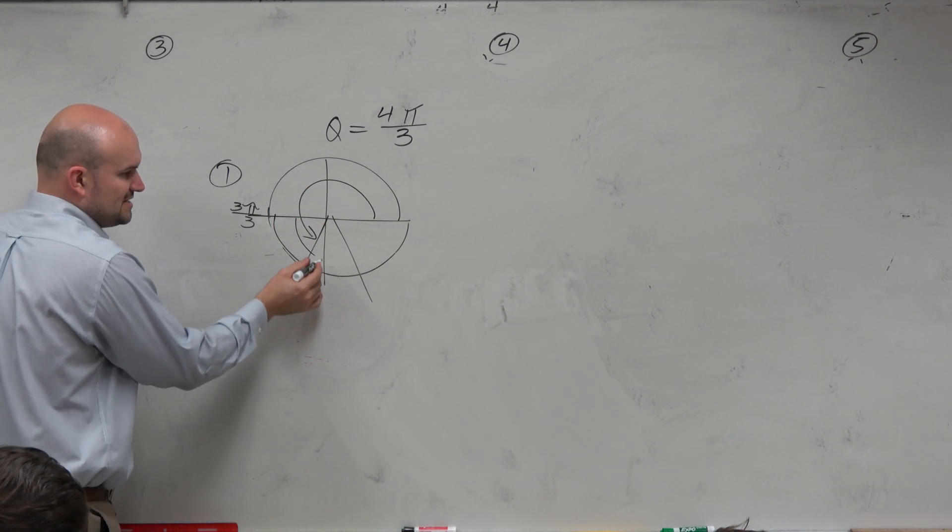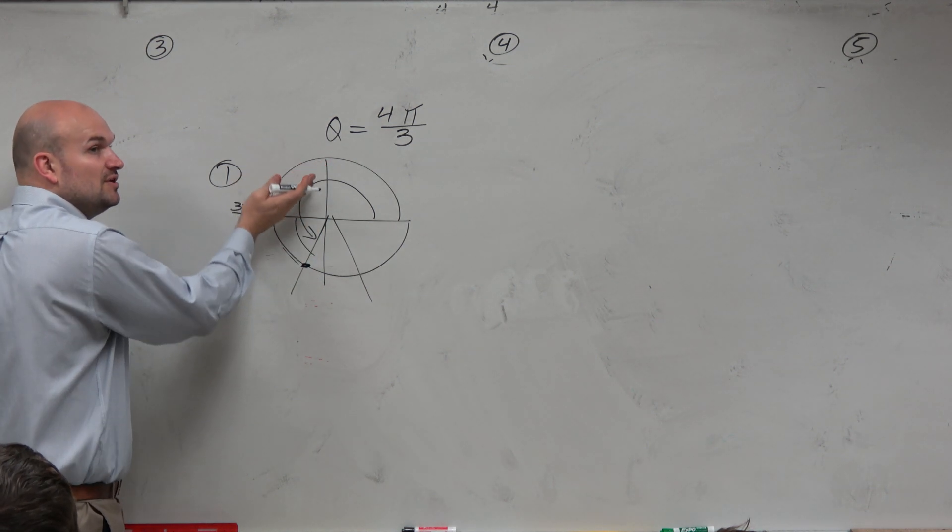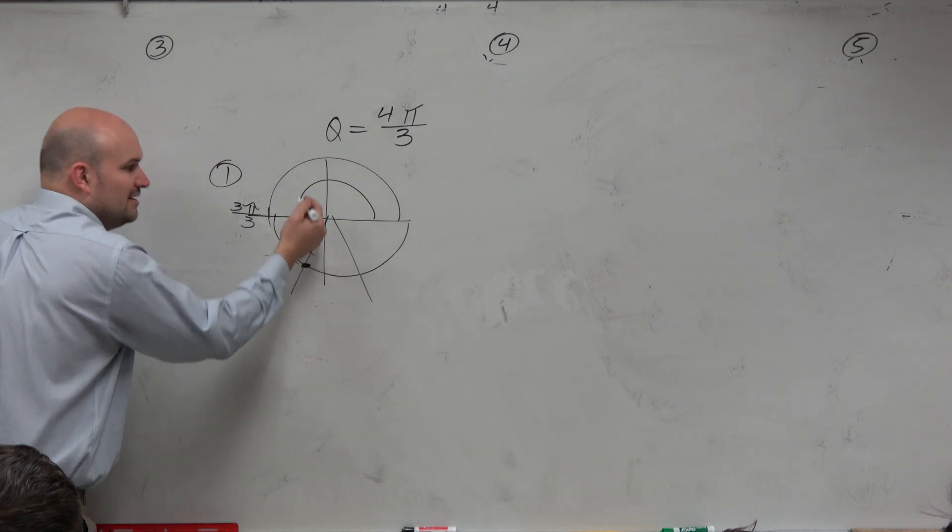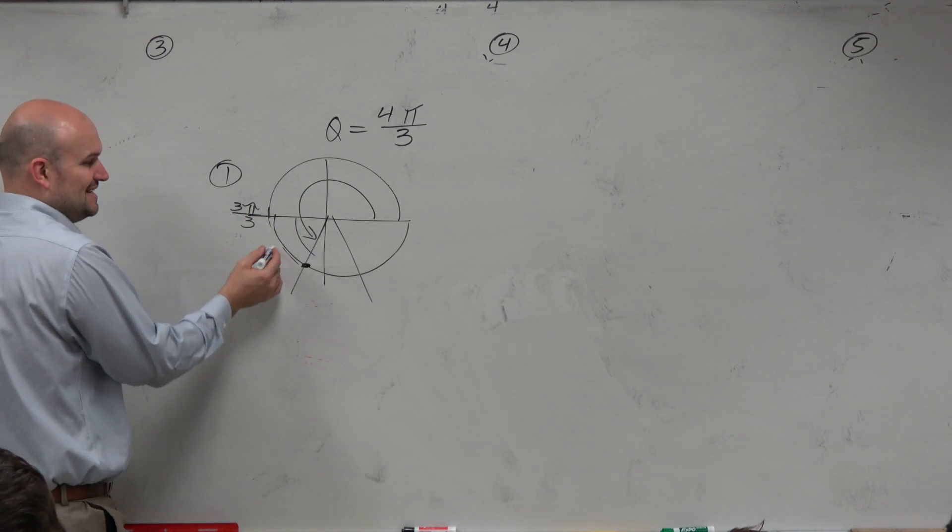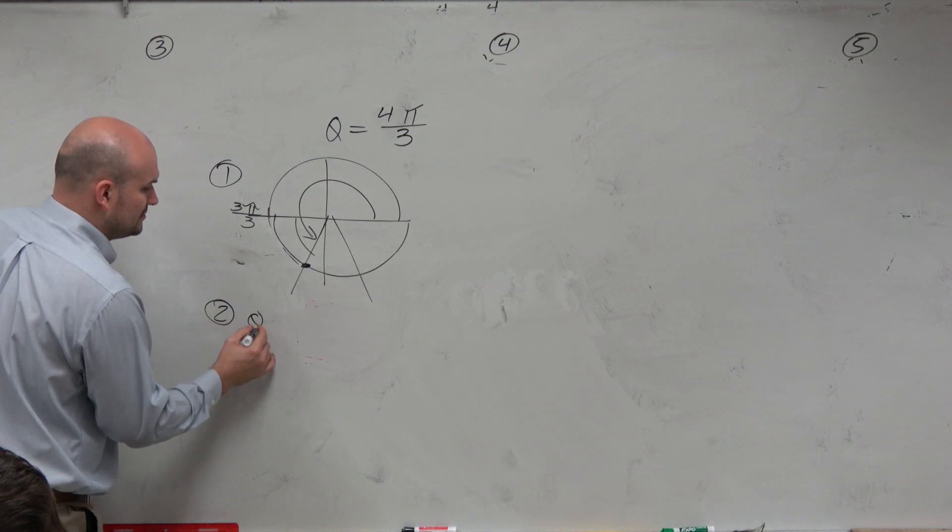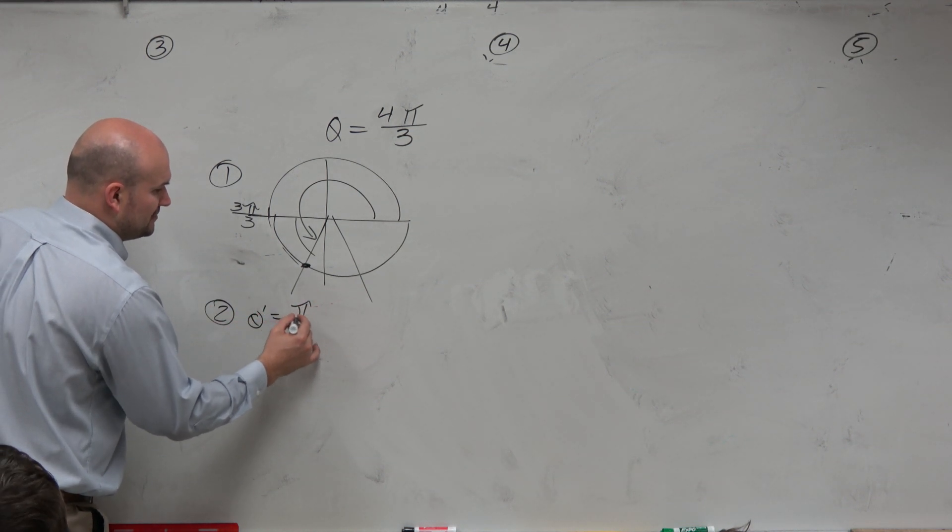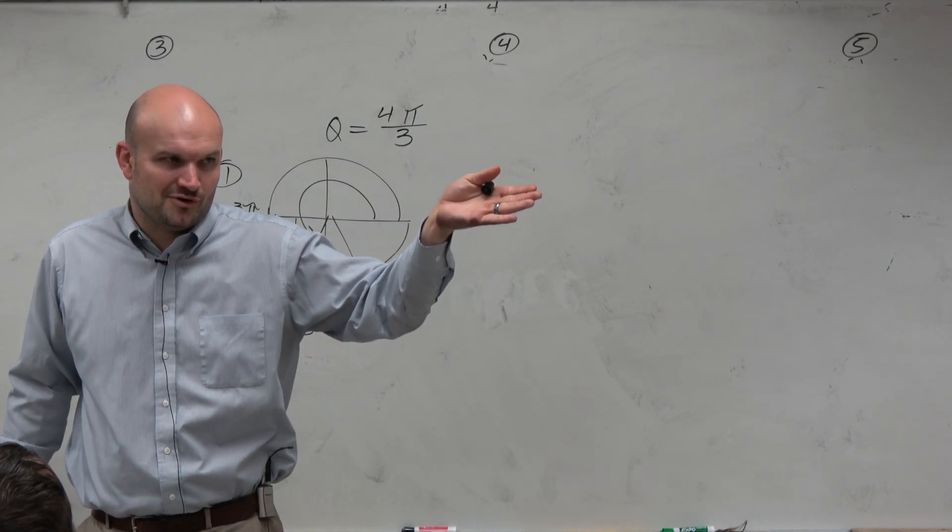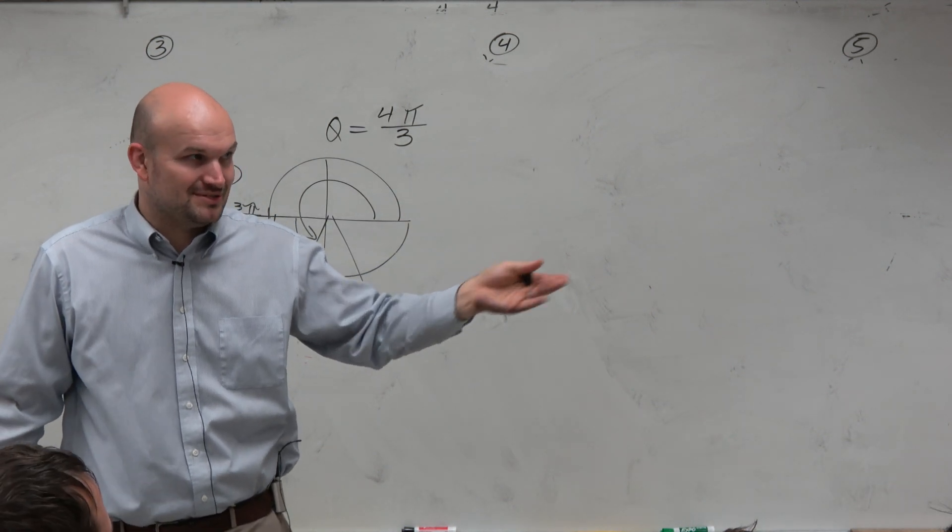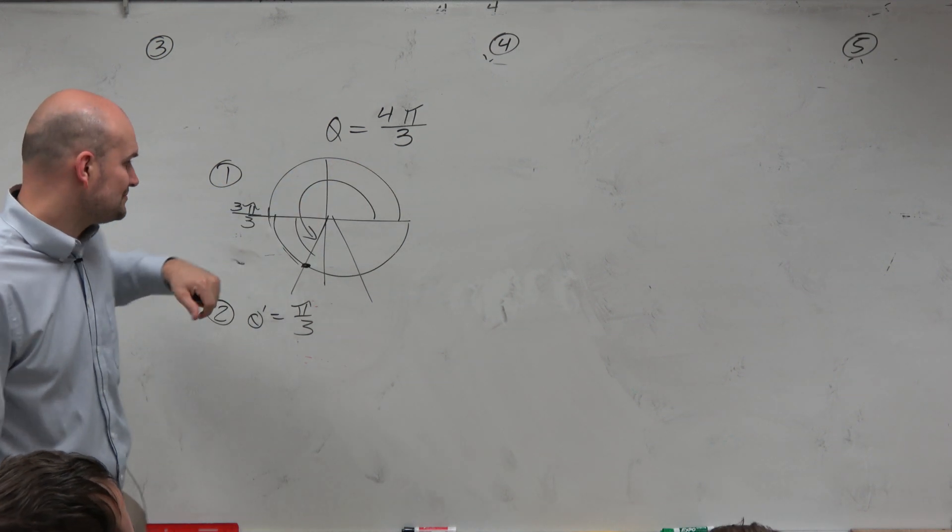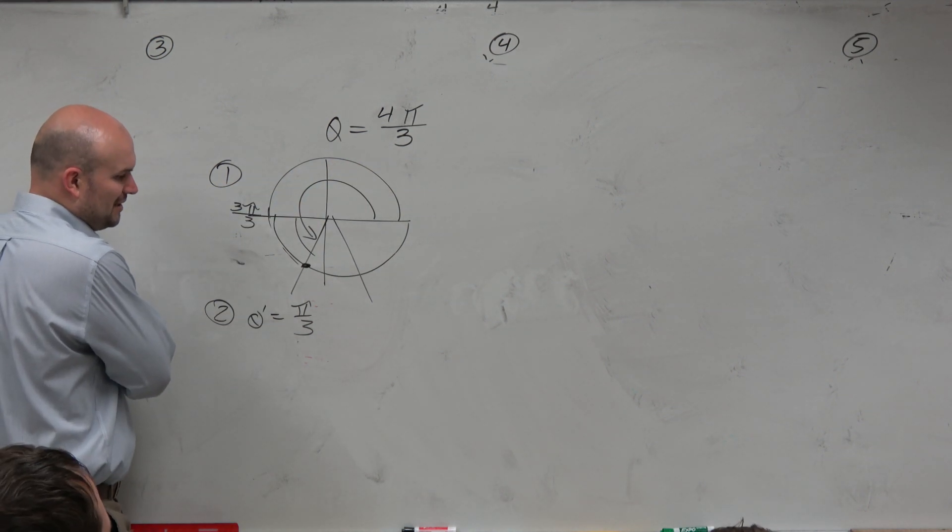Then we understand that the reference angle is from here to here. We went an extra π over 3 over π. So therefore, the distance between our terminal side and our x-axis is π over 3. So we could say the reference angle is π over 3. Guys, your reference angle is either going to be π over 3, π over 4, or π over 6. You don't have that many options. And usually, that's kind of a good indicator of what it's going to be. So anyways, we have θ is π over 3.